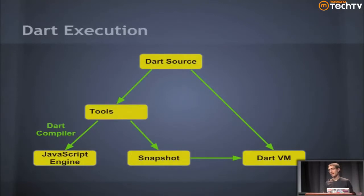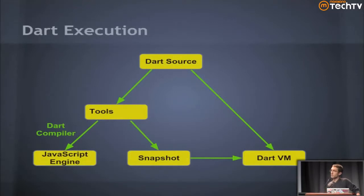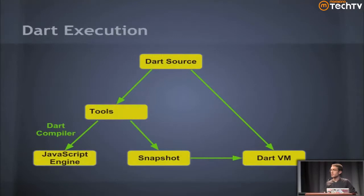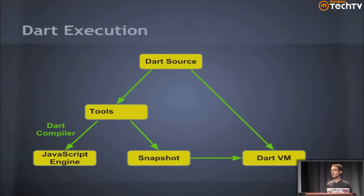So you've written some Dart code — how do you execute it? You can run it directly on a Dart virtual machine. The Dart VM is part of this open-source batteries-included project you can play with today. We've also built out a really great lightweight editor called the Dart editor that you can run and author code inside. We've also built a to-JavaScript compiler. The most recent compiler is called Frog, and it's designed to give you very optimal, succinct, but human-readable JavaScript code.